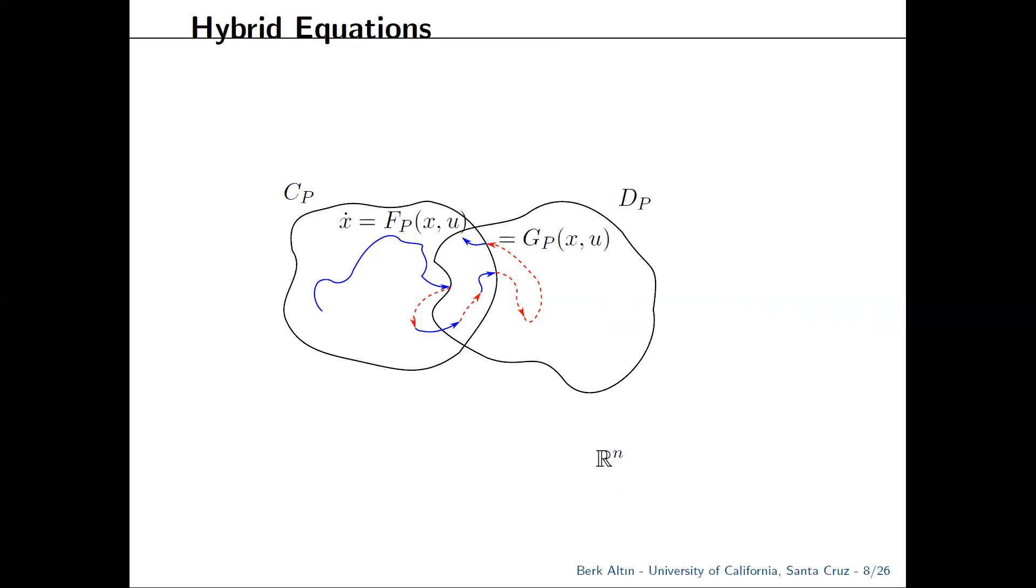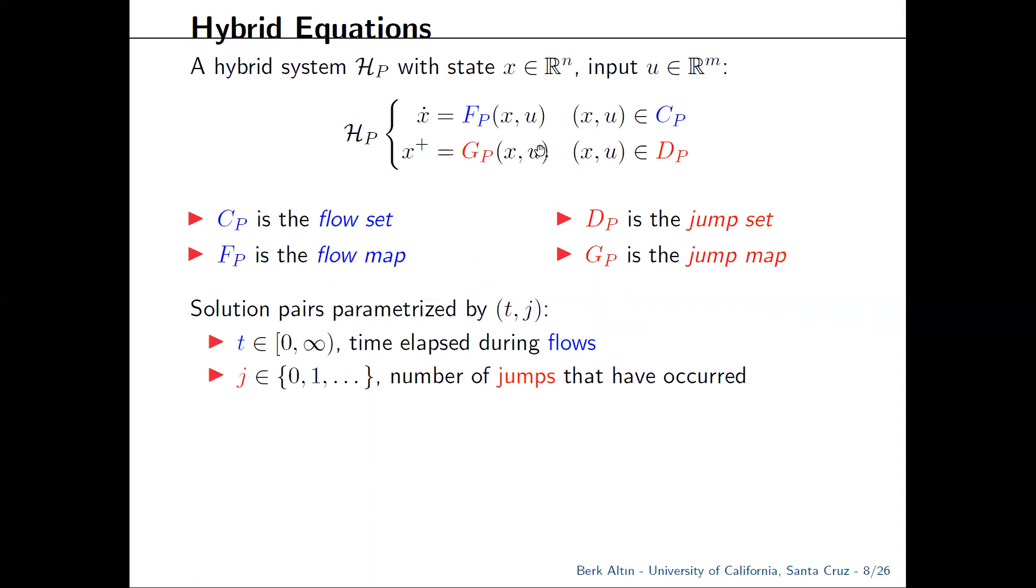We call this the hybrid equations framework, and since we assume uniqueness for MPC, we work primarily with equations, but we do have generalizations to inclusions as well. The continuous evolution is shortly referred to as flows and the discrete evolution as jumps, and we parameterize solutions by two independent variables, keeping track of both the duration of flows and number of jumps.